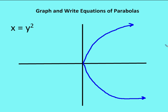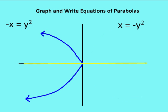I can also have a parabola that opens to the right. In this case I'm just switching the x and y values — before I had y is equal to x squared, now I have x is equal to y squared. Since anything squared is going to be positive, the x values are always positive and the parabola opens to the right. I can also have a parabola that opens to the left, with equations negative x equals y squared, or x equals negative y squared.